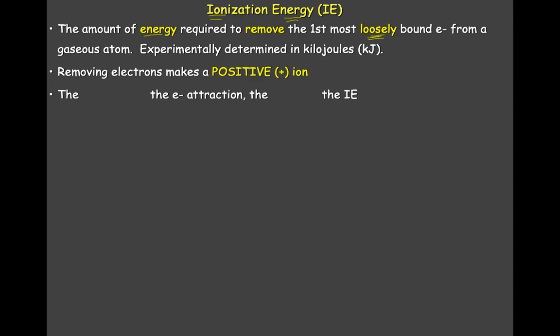Don't forget that when you remove an electron, you create a positive ion — because if you lose an electron it becomes more positive; lose two, it becomes two plus, and so on. The stronger the attraction for the electron, the higher that number is going to be, because it's going to be tougher to pull it off. This gives us an idea of how strongly the nucleus is holding on to that electron by looking at the energy needed to remove it.